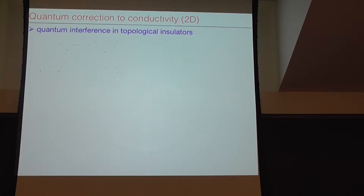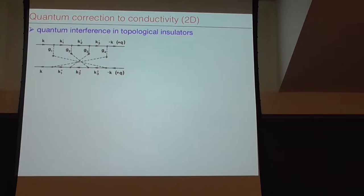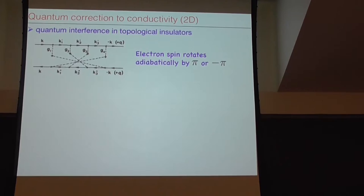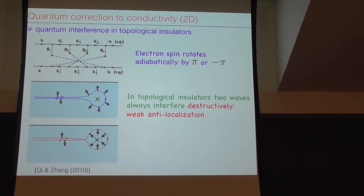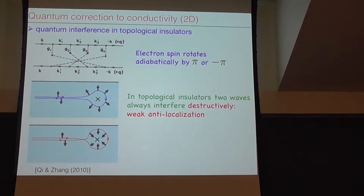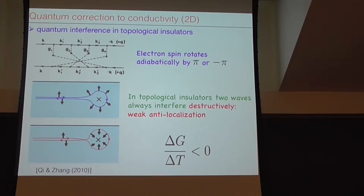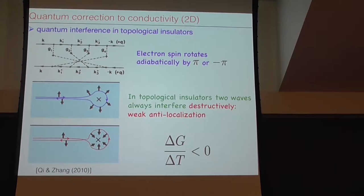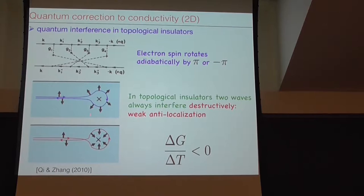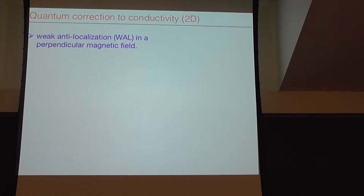In topological insulators, things are different. When an electron goes around the impurity, there are two options - to go one way here or another way, time-reversed path. The spin rotates by pi - the total phase difference will be two pi. And because of that, actually there is destructive interference. You don't get localization, you get anti-localization. In other words, when you decrease the temperature, you increase your tau phi, your conductivity actually grows.